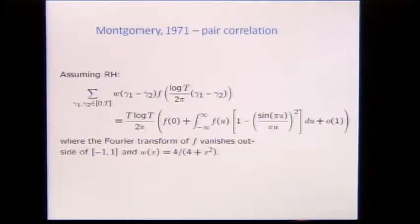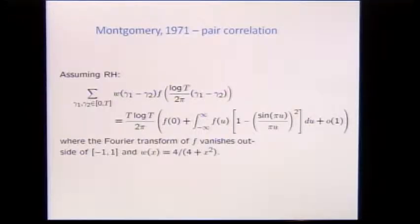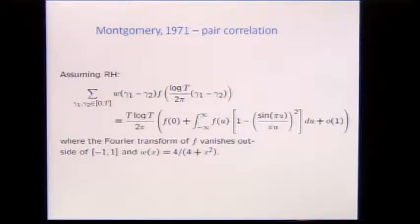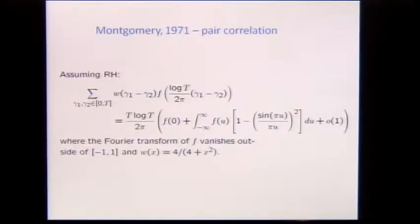We already heard in the last talk about Montgomery's pair correlation theorem and conjecture. If you have a test function f and you're sampling differences between ordinates of zeros — gamma one minus gamma two — scaled by log t over two pi so that the average spacing between consecutive zeros is one, summing over pairs of gammas between zero and t, then you get this beautiful answer with the kernel 1 minus (sin πu / πu)². Montgomery proved this assuming the Fourier transform of f is zero outside of minus one to one, but we believe this is true without that restriction.